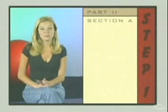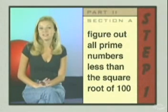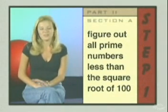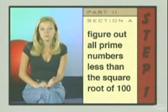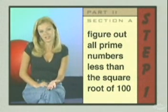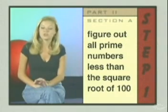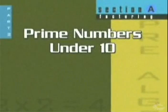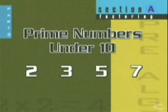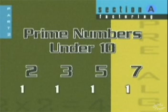Our first step is to figure out all of the prime numbers less than the square root of 100. If you don't know about square roots yet, don't worry too much about it right now — we're going to look at that more in the next section. For now, just know that the square root of 100 equals 10. So what are all the prime numbers under 10? We've got 2, 3, 5, and 7. We know this because each of these numbers has only 2 factors: 1 and itself.